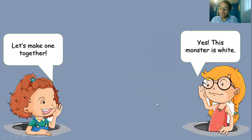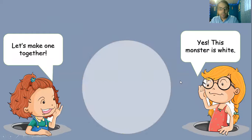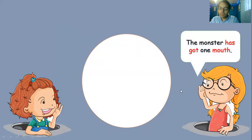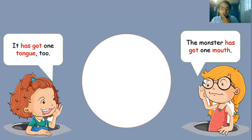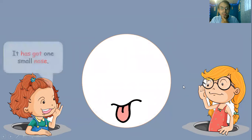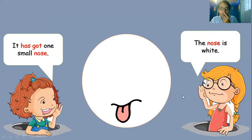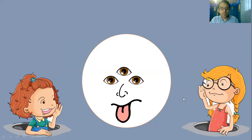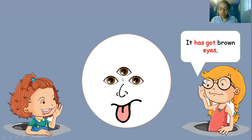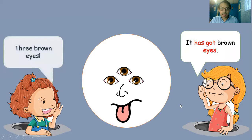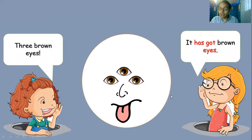Let's make one together. This monster is white, dice Maggie. The monster has got one mouth. Jen dice: 'It has one tongue too.' Tiene una boca y también tiene una lengua. It has got one small nose — Maggie dice the nose is white, la nariz es blanca. Oh, it has got brown eyes — aparecieron los ojos — three brown eyes, tres ojos marrones.